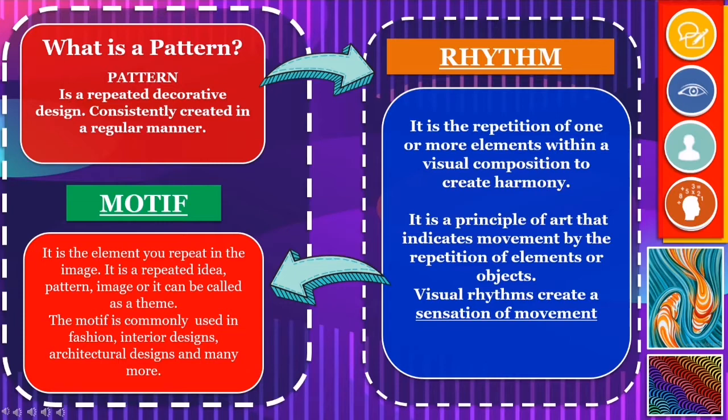What do we call the process of repetition? It's rhythm. It is the repetition of one or more elements within a visual composition to create harmony. It is a principle of art that indicates movement by the repetition of elements or objects. Visual rhythms create a sensation of movement.